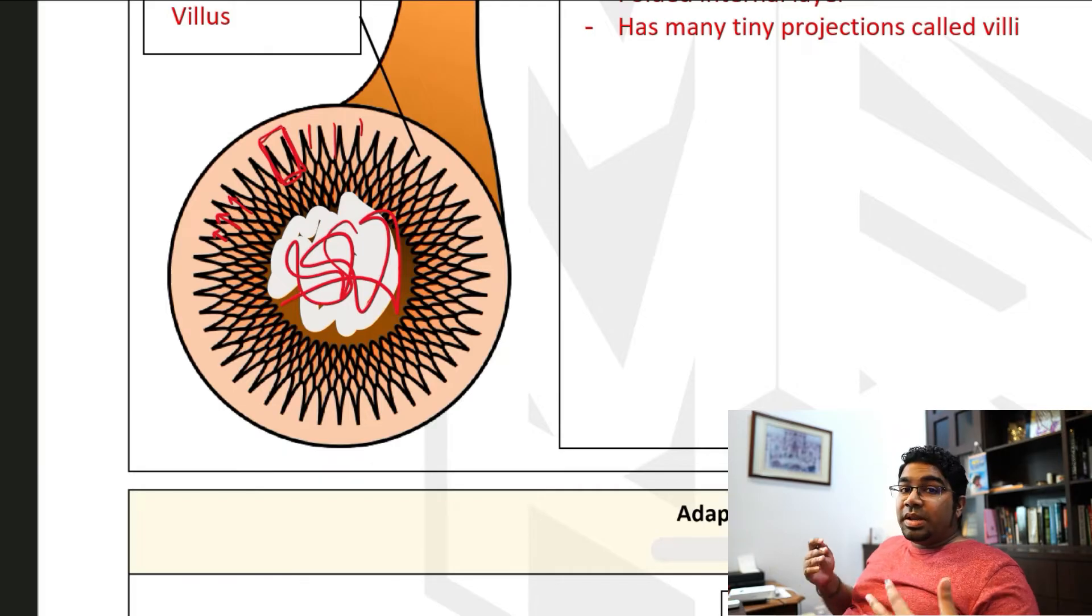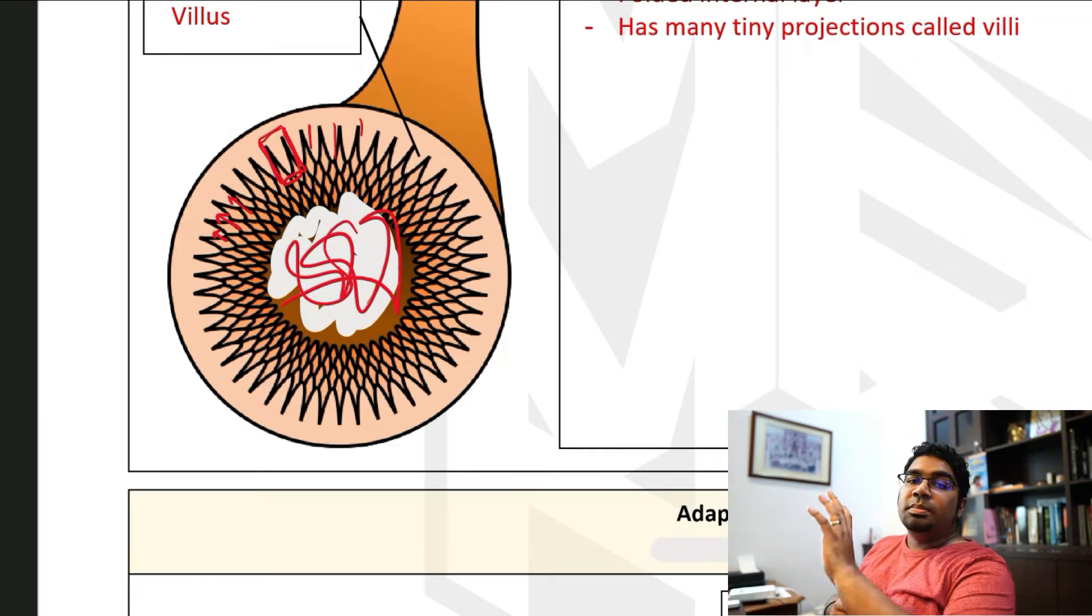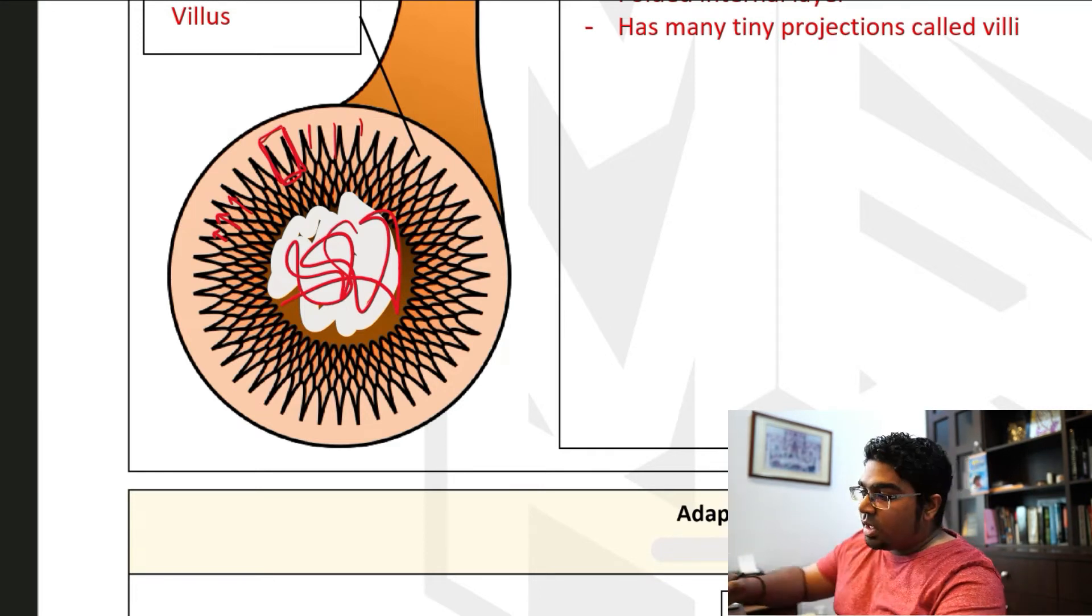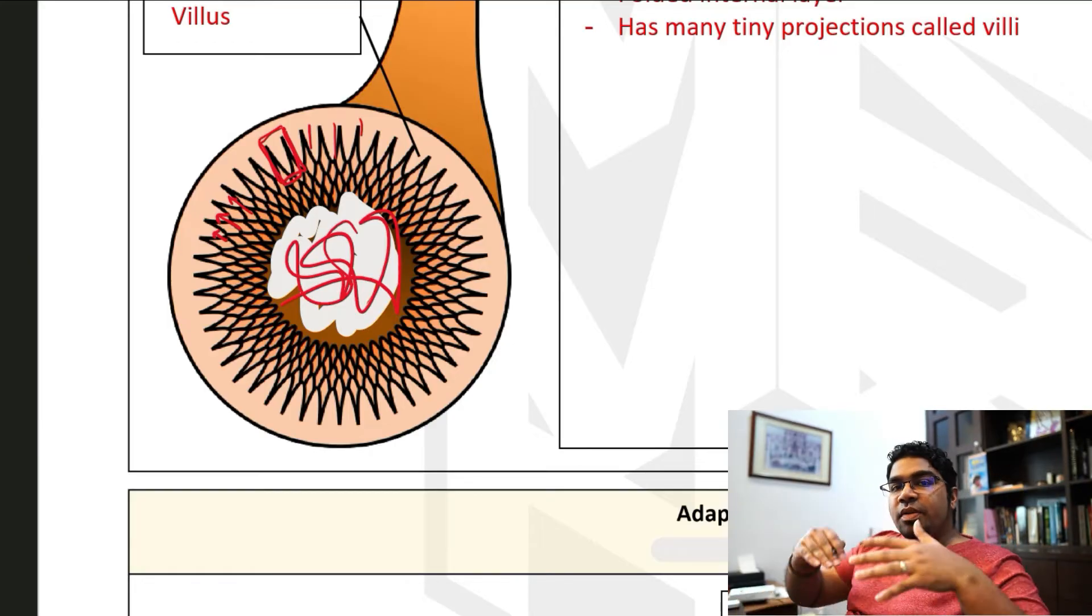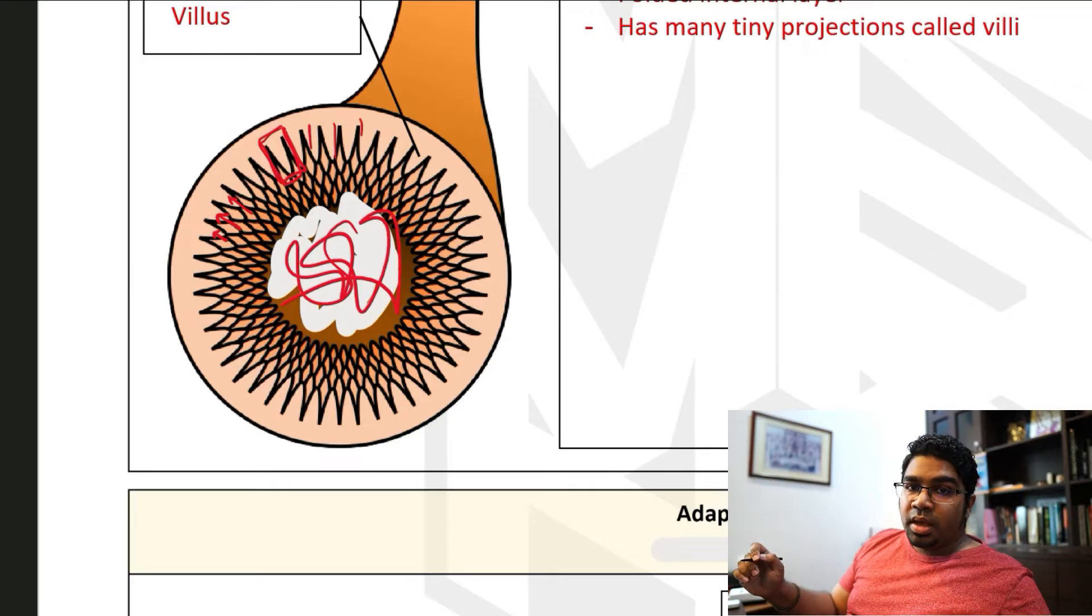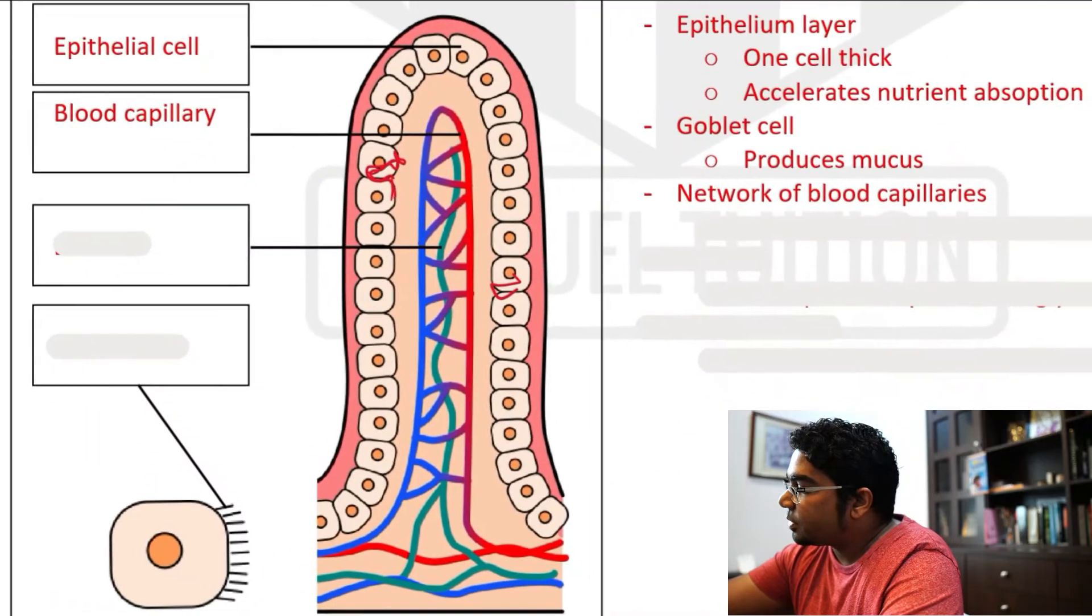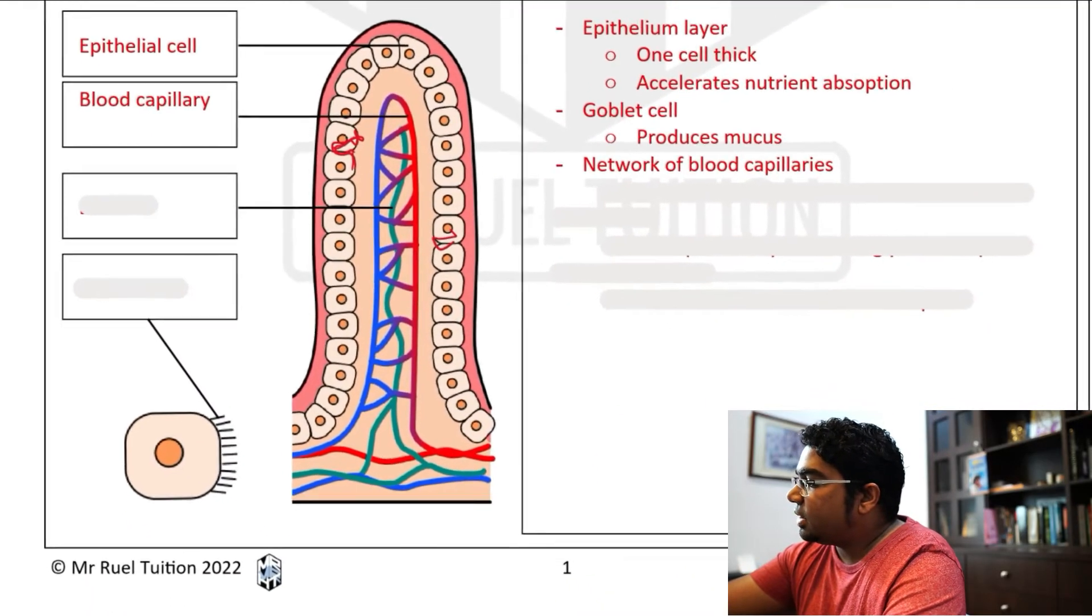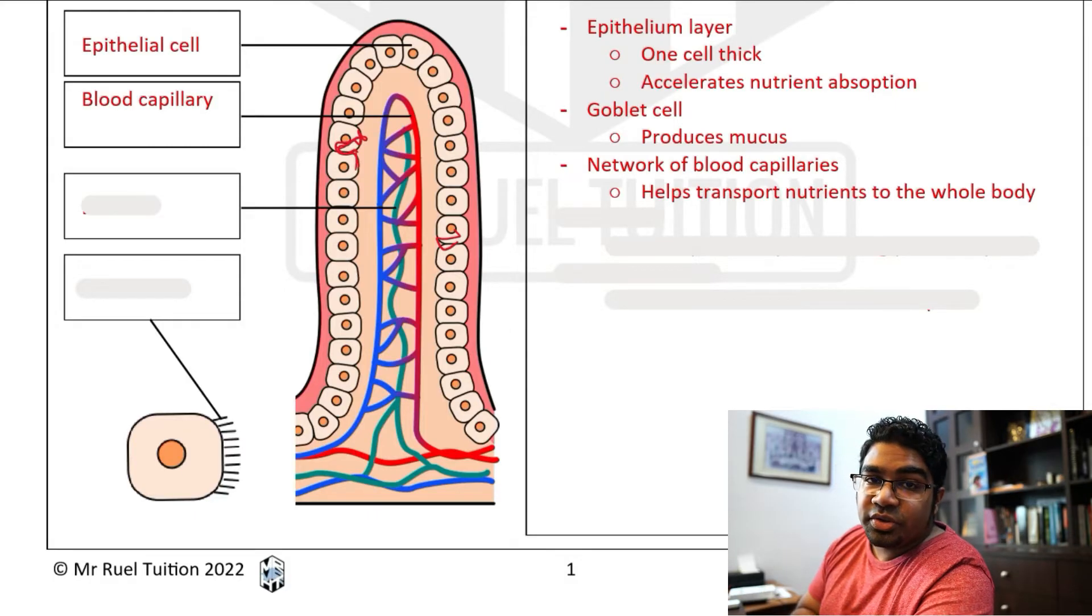So therefore, we need some sort of transportation network. This is where the blood circulatory system comes in. And so first, the nutrient must enter the blood. From the blood, it is distributed to all parts of the body. And so that is the importance of the network of blood capillaries here. So the blood capillaries' function is to help transport nutrients to the whole body.